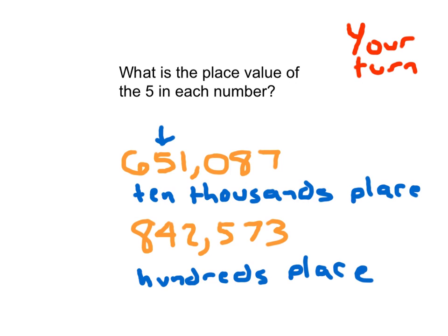Could you read both these numbers for me? Did you say 651,087? A lot about place value is reading numbers. Could you read this other one? 842,573.